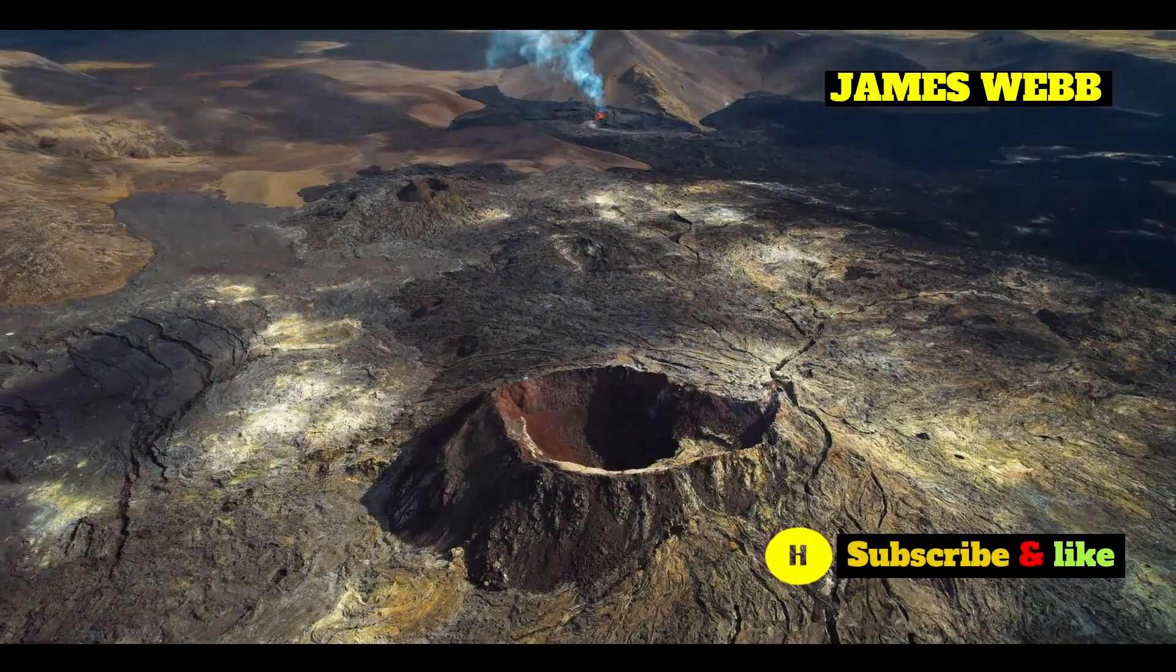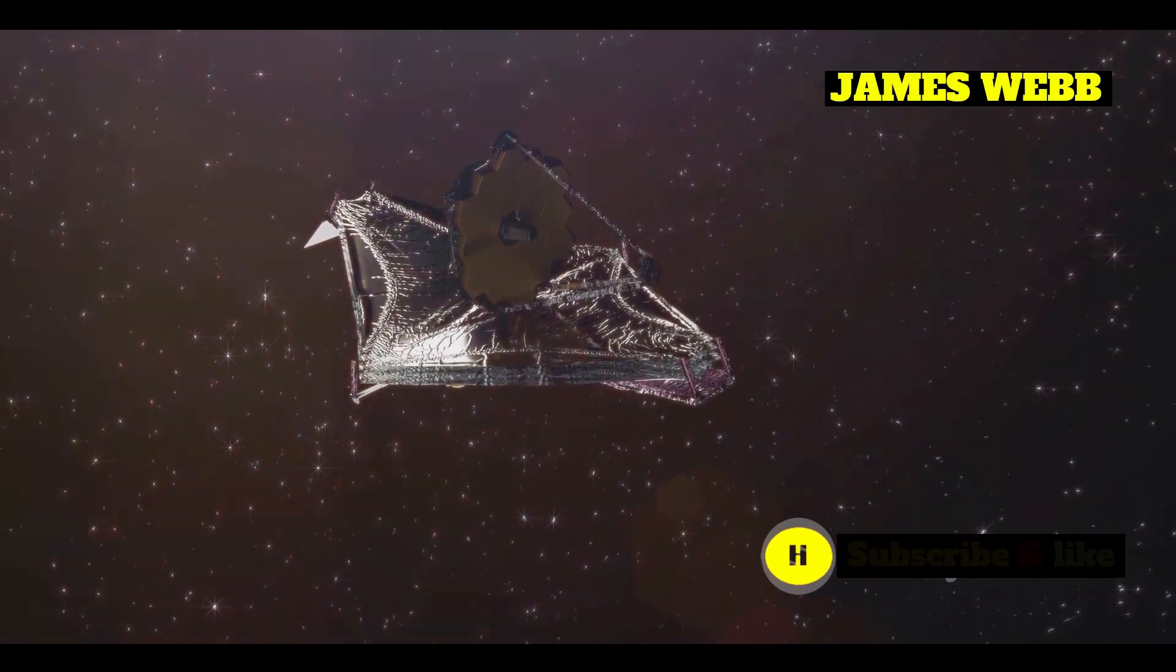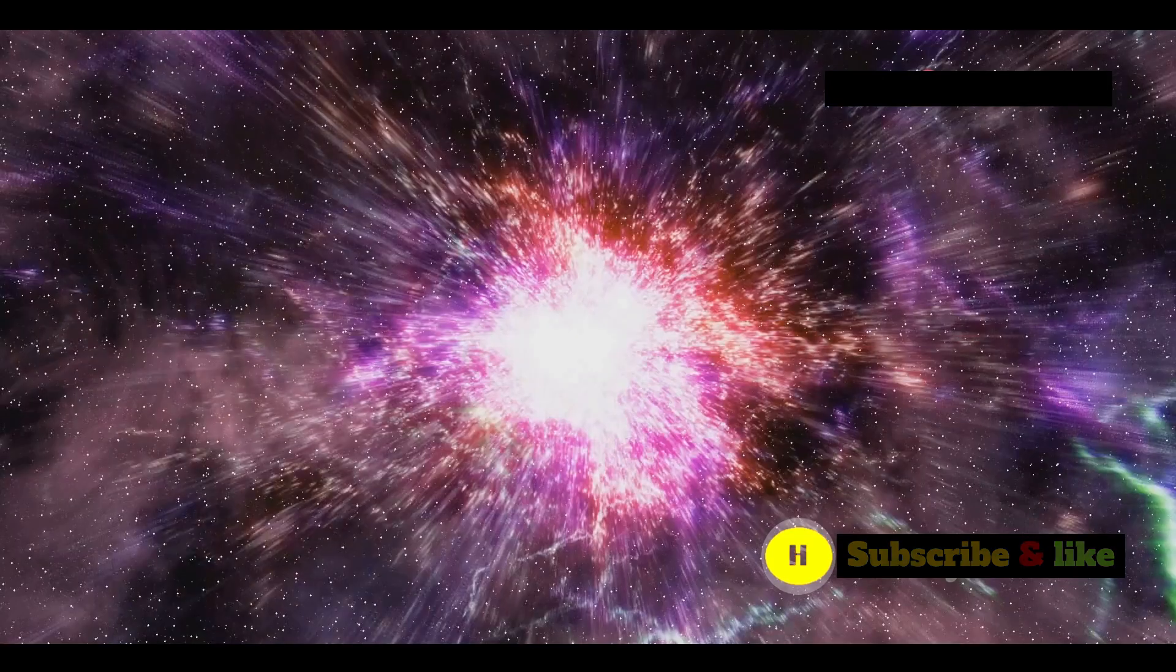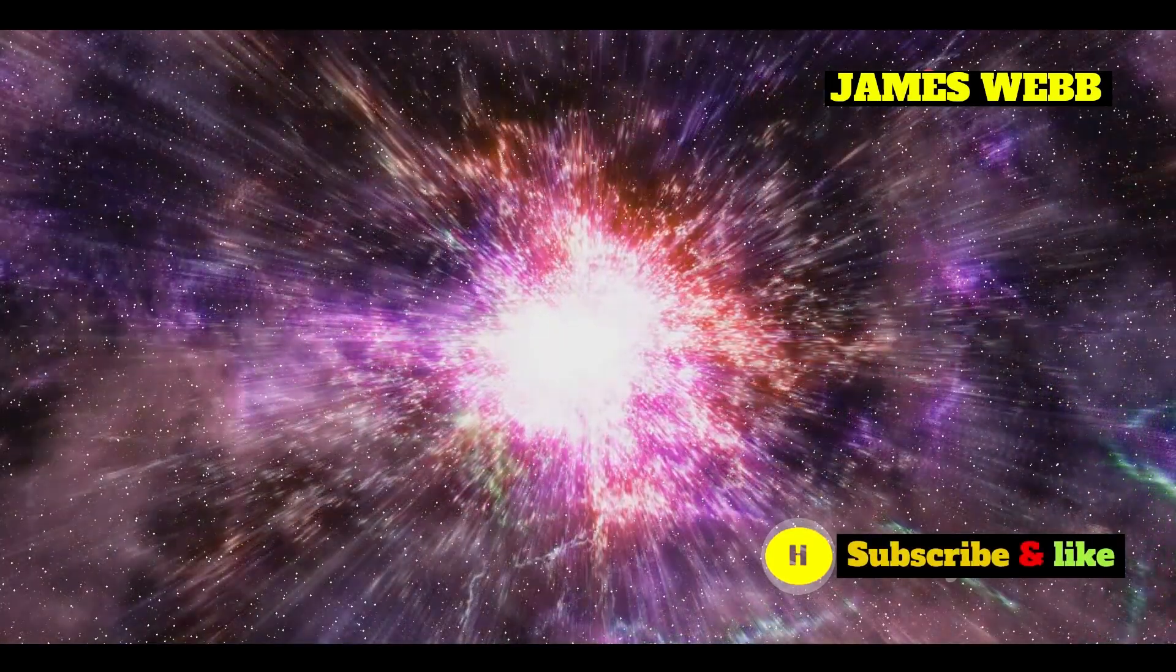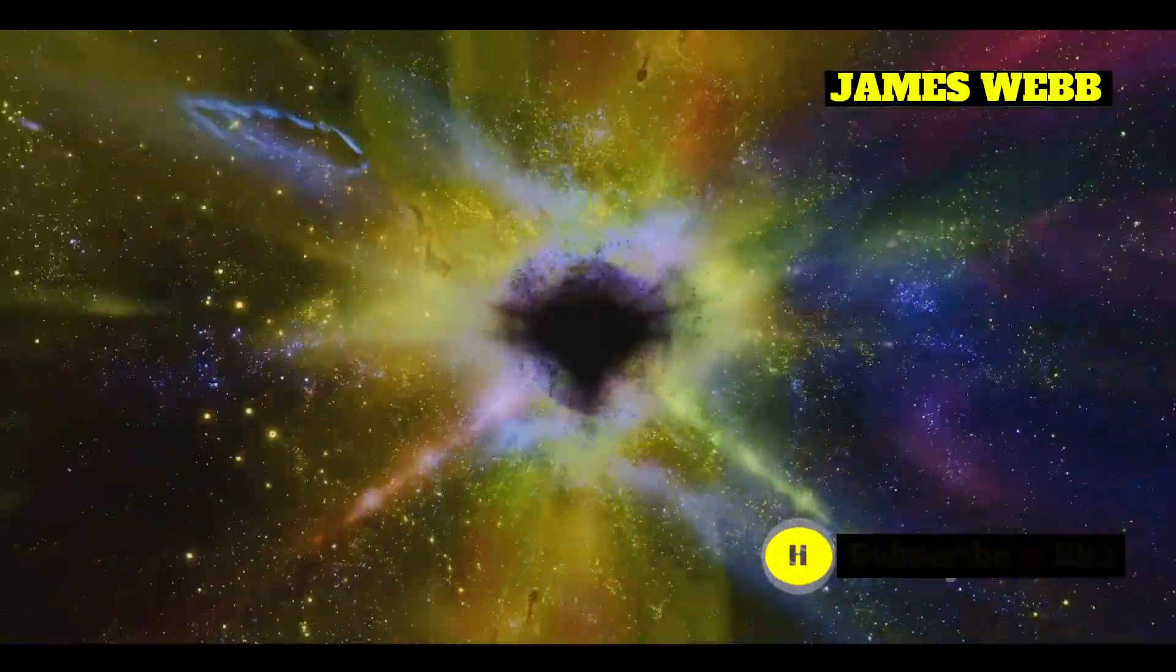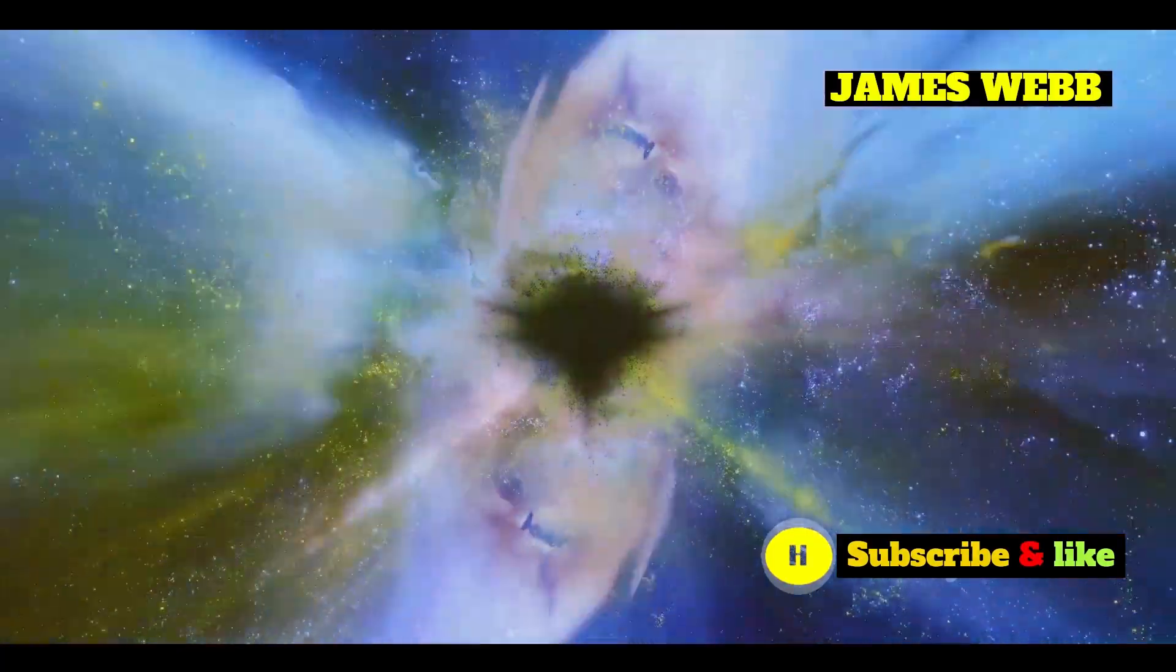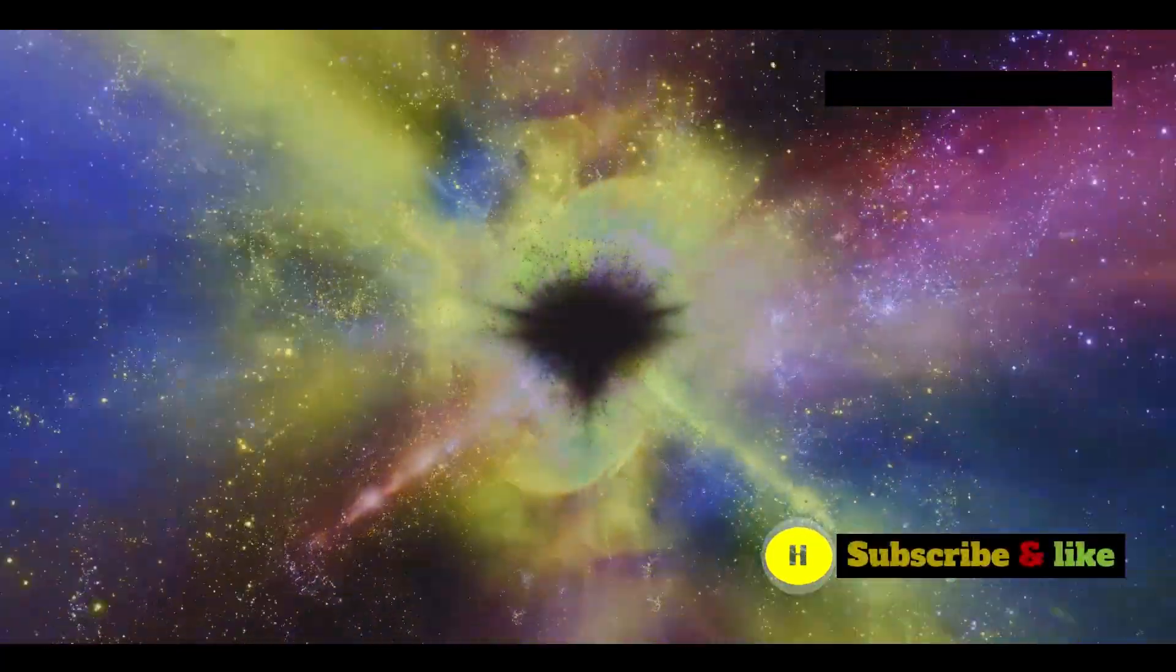55 Cancri E experiences some of the most extreme temperature differences between its day and night sides of any known planet. Because it orbits so closely to its star, 55 Cancri E is likely tidally locked. This means that one side of the planet always faces the star, the dayside, while the other side always faces away, the nightside.